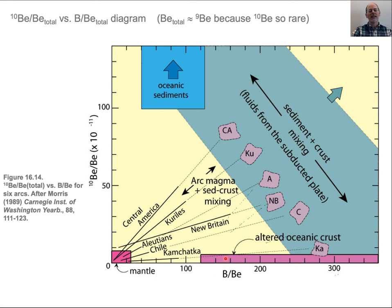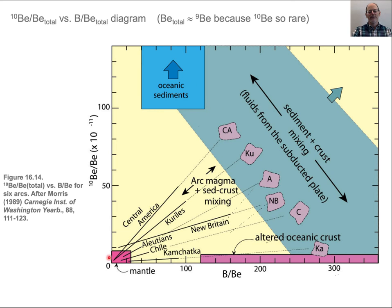Altered oceanic crust plots here — no beryllium-10, but high boron concentration. Sediments plot up in this direction with moderately high boron-to-beryllium but super high Be-10, unlike the mantle. What is found is that there are mixing lines from arcs including Kamchatka, Chile, the Aleutians, New Britain, the Western Pacific, Kur Isles, and Central America — all showing mixing lines that connect sediment-rich materials with mantle sources or oceanic material with mantle sources.